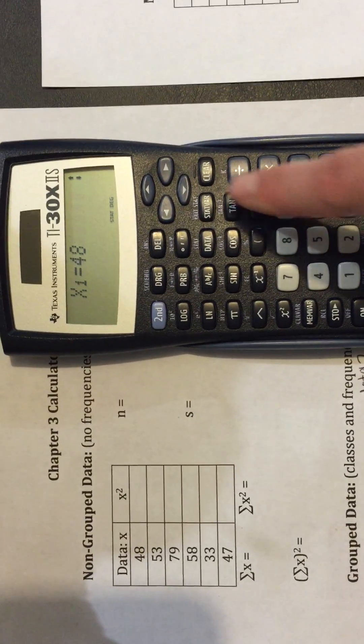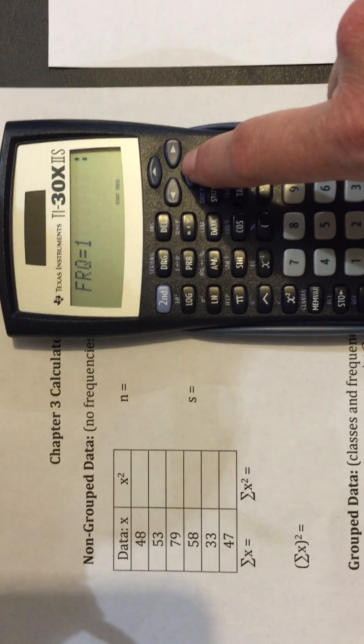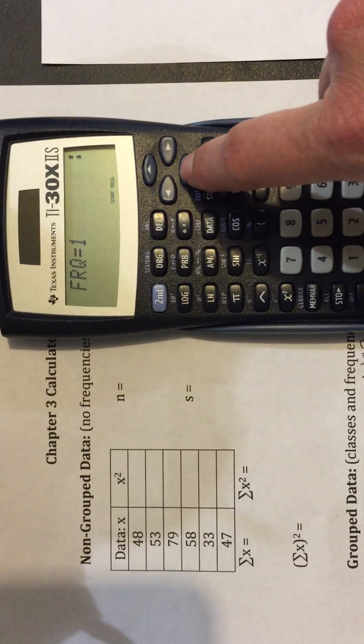48. Use the down arrow. Frequencies, how many of those do you have? Just one, since we're non-grouped.